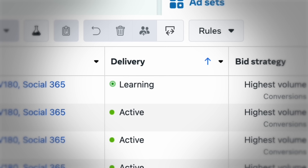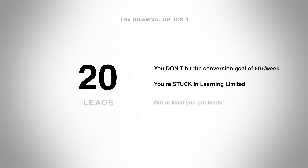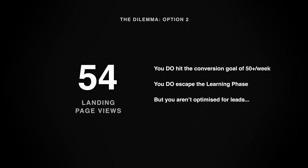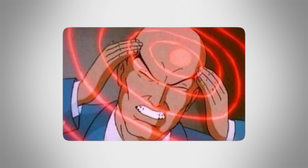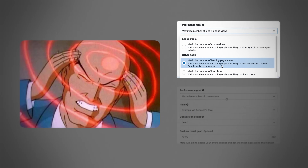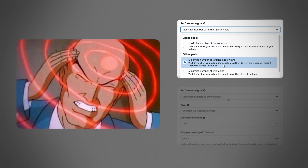That left advertisers with a bit of a dilemma. You could either operate with say 20 leads a week, not get out of the learning phase, be stuck in Learning Limited, but optimizing for what you really want — which is usually leads. Or you could think, maybe I could change what I'm optimizing for, because I'm not getting 20 leads a week but I'm getting more than 50 landing page views a week. So I could optimize for landing page views and get out of the learning phase. But you might see worse overall results, because Meta is putting all that AI power into getting you landing page views instead of leads, which often didn't produce a better result even if it did help you exit the learning phase.